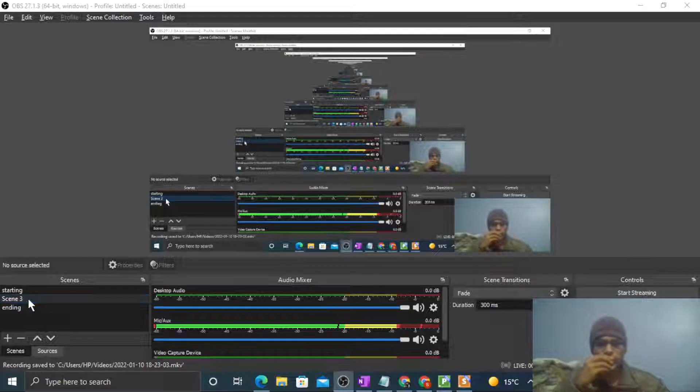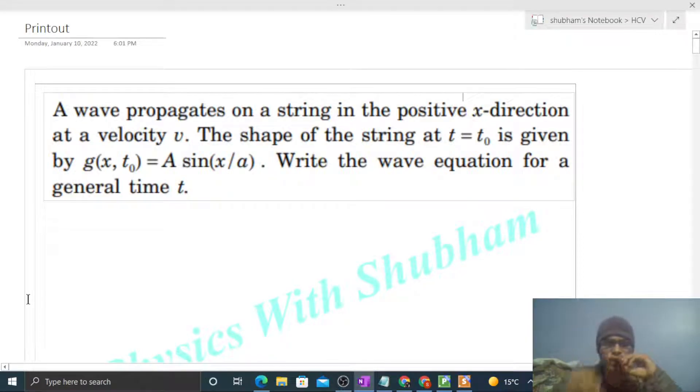Okay, hi everyone. Today let's discuss one interesting problem. It says a wave propagates on a string in the positive x direction at a velocity v. The shape of the string at t equals t naught is given by this equation. Write the wave equation for a general time t.